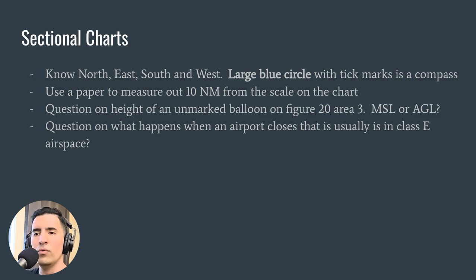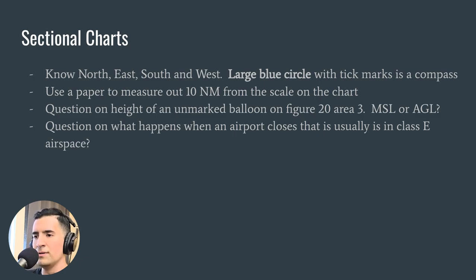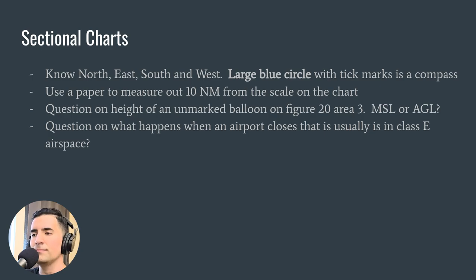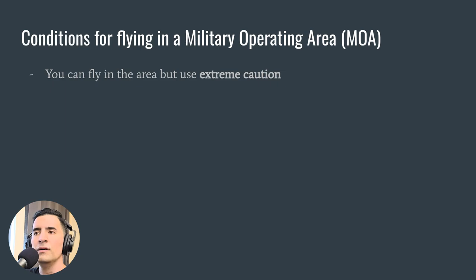What happens when an airport closes? That airport is usually in class E airspace, so know what happens when an airport is part-time and what airspace it becomes when it closes. Regarding military operating areas, you can fly in the area but use extreme caution.